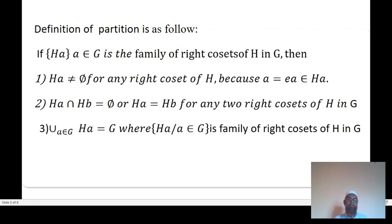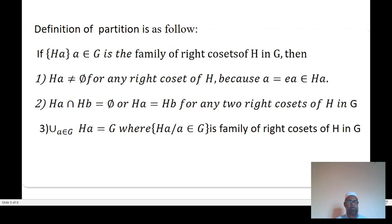The definition of a partition is as follows. If {HA : A ∈ G} is the family of right cosets of H in G, then: one, HA is not empty for any right coset, because A = eA belongs to HA, so the right coset is always non-empty. Two, HA ∩ HB = ∅, meaning they are disjoint, or HA = HB for any two right cosets of H in G.